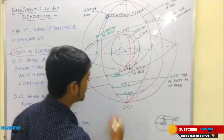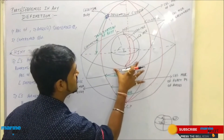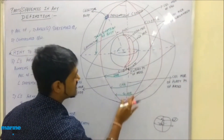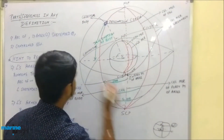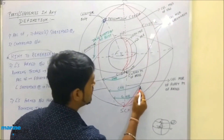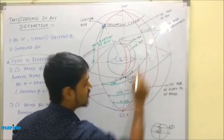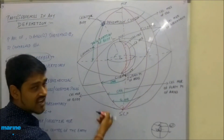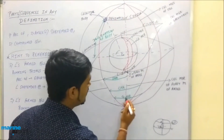Moving on to LHA — same, similar kind of definition: arc of the equinoctial or angle subtended at the celestial poles, contained between the celestial meridian of the observer and that of the body, measured westward from the observer.